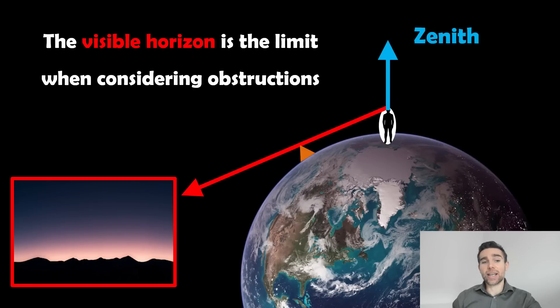Now, the visible horizon is essentially the limit when considering obstructions. So this time round, if you're looking out to the horizon where the Earth meets the sky, but this time round there's going to be an obstruction in the way. For example, it could be mountains, it could be trees, other things like that. So the visible horizon actually isn't going to be as low down as the true horizon.